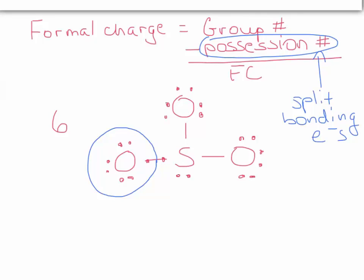How many electrons do you see in the circle? One, two, three, four, five, six, seven. It has a possession number of seven, giving this oxygen a formal charge of minus one.